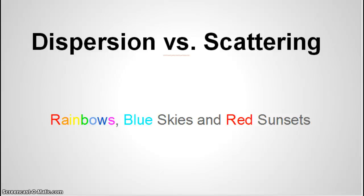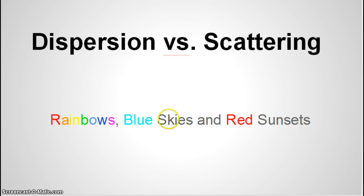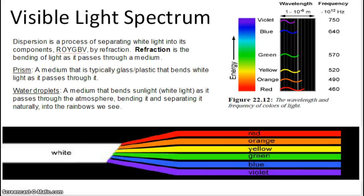In this video, we're going to compare and contrast the difference between dispersion and scattering. We'll be talking about dispersion in the context of how and why rainbows form and occur, and scattering as to why we see blue skies when the sun is above the horizon, and red sunsets and sunrises when the sun is near the horizon.